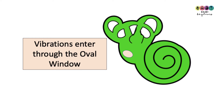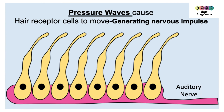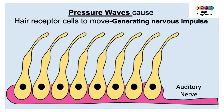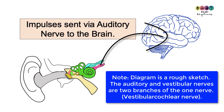The vibrations are passed into the cochlea through the oval window. Once inside the fluid-filled cochlea, those vibrations establish pressure waves. The hair receptor cells inside the cochlea are stimulated to move in response to those pressure waves, and when they move they generate an electrical impulse which gets sent to the brain via the auditory nerve — shown in pink in the diagram.